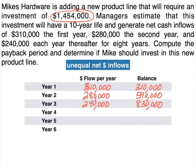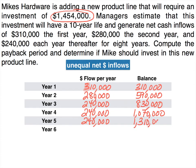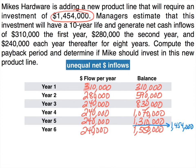In year five, adding $240,000 brings our running balance to $1,310,000 — we're almost there. In year six, adding another $240,000 brings us to $1,550,000, so we've reached and passed the goal. The target of $1,454,000 falls somewhere between year five and year six. So we know it will take more than five years but less than six years to recover the investment.